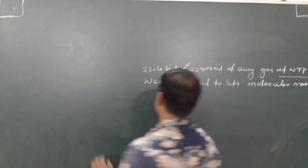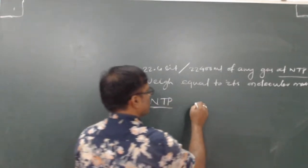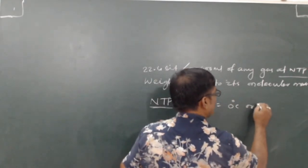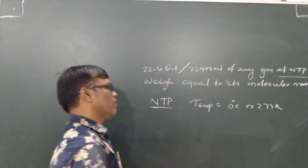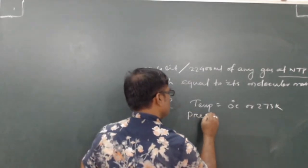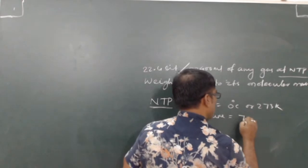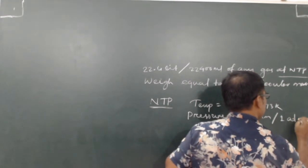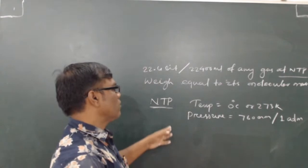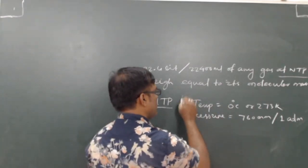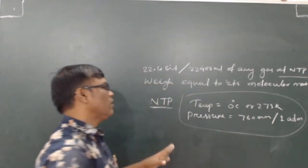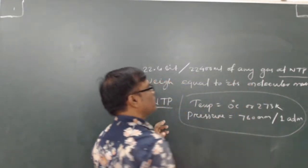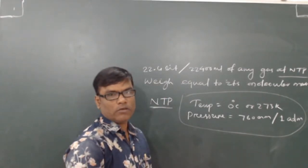What is NTP condition? NTP condition means temperature should be 0 degrees Celsius or 273 Kelvin, and pressure should be 760 mm or 1 atmospheric pressure. At these conditions, 22.4 liters or 22,400 ml of any gas will equal its molecular mass.